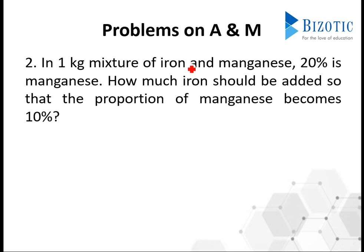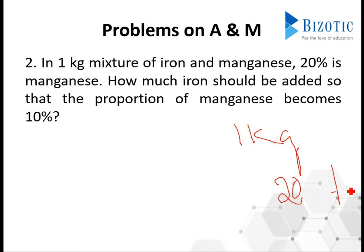In 1 kg mixture of iron and manganese, 20% is manganese. How much iron should be added so that the proportion of manganese becomes 10%? So in 1 kg of mixture, both iron and manganese are present, and 20% is the concentration of manganese. In order to make this manganese concentration 10%, how much iron should be added? It's like a quick question — when you see it, you should be able to get it. But they have asked you in proportion, so let's see.